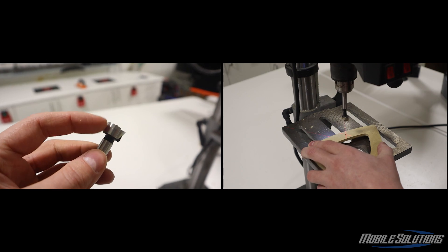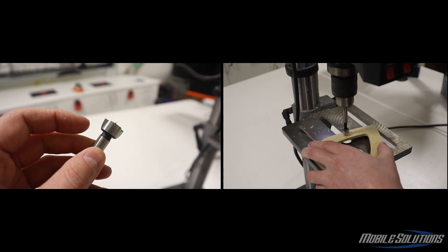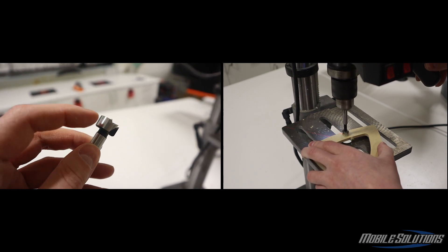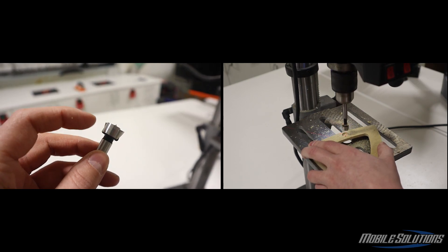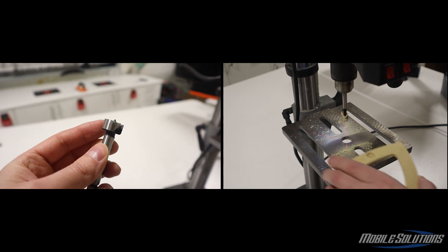Now my magnet match bits are a prototype so they don't have this feature, but the ones that are shipping will have a line on the side that indicates how deep you need to go into the workpiece in order to allow for fitment for the Mobile Solutions magnets.